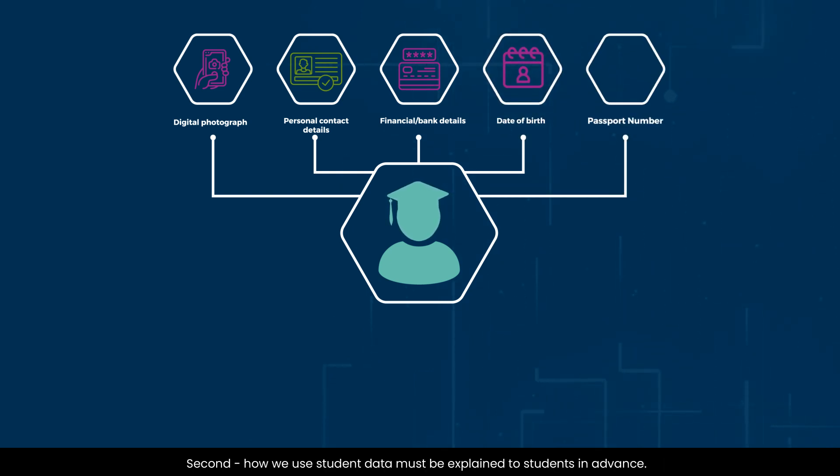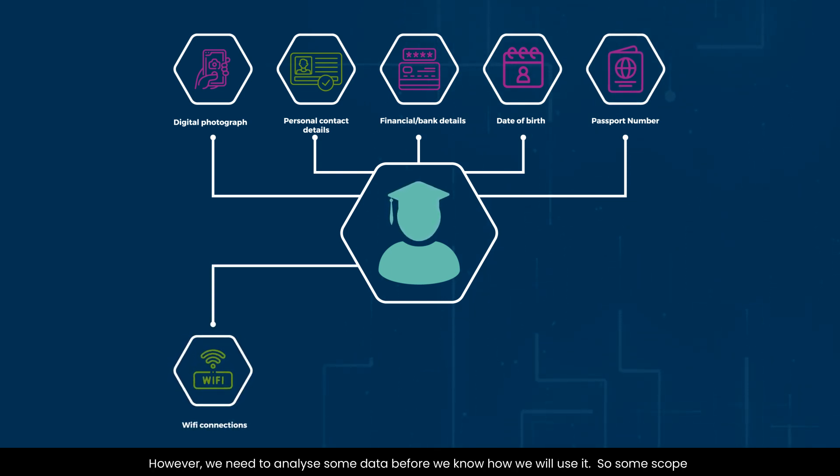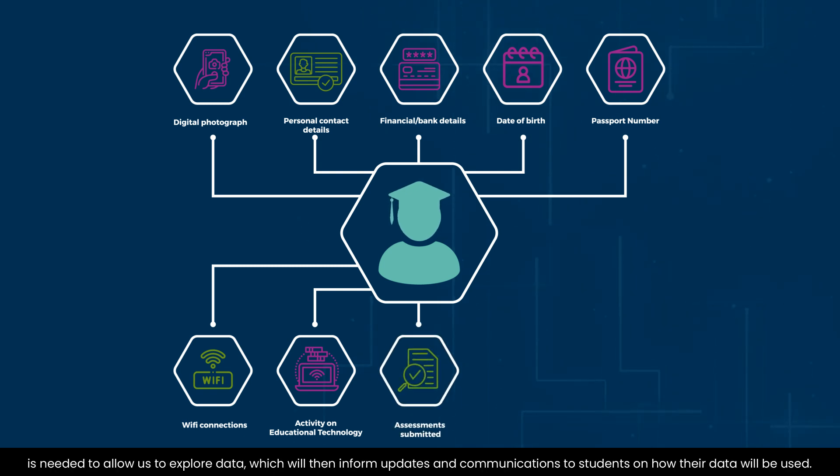Second, how we use student data must be explained to students in advance. However, we need to analyze some data before we know how we use it. So some scope is needed to allow us to explore data which will then inform updates and communications to students on how their data will be used.